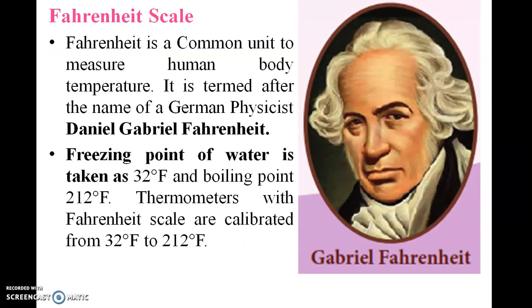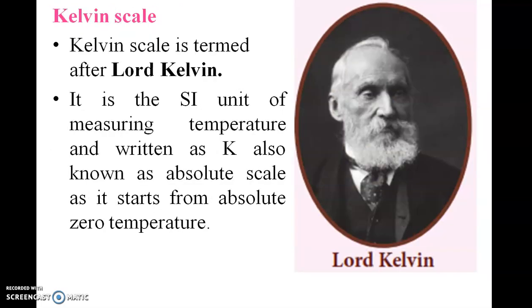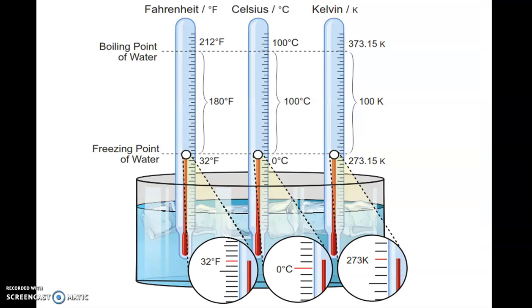Fahrenheit scale is a common unit to measure human body temperature. It is named after German physicist Daniel Gabriel Fahrenheit. The freezing point of water is 32 degrees Fahrenheit and the boiling point is 212 degrees Fahrenheit. Kelvin scale is named after Lord Kelvin. It is the SI unit of measuring temperature, written as K. The freezing point in different units: Fahrenheit 32, Celsius 0, Kelvin 273. The boiling point: Fahrenheit 212, Celsius 100, Kelvin 373.